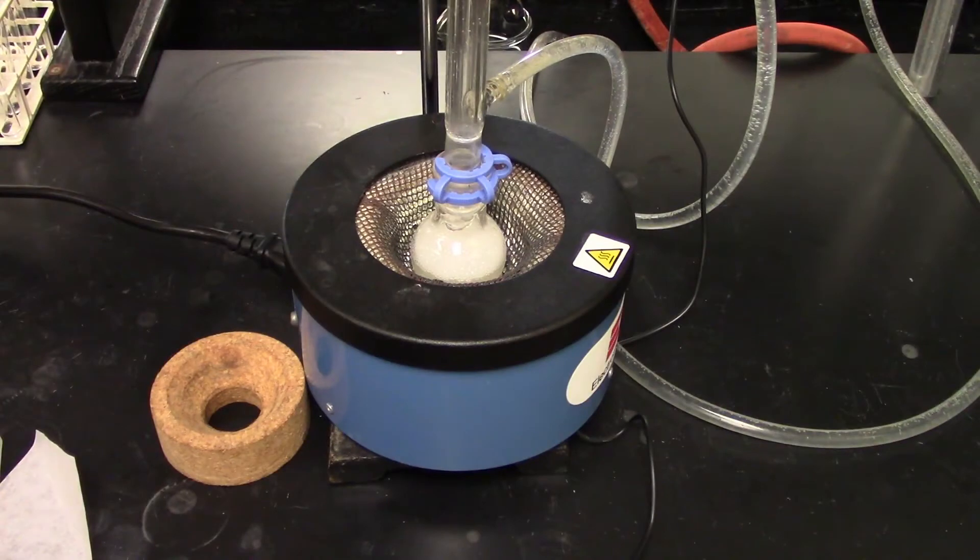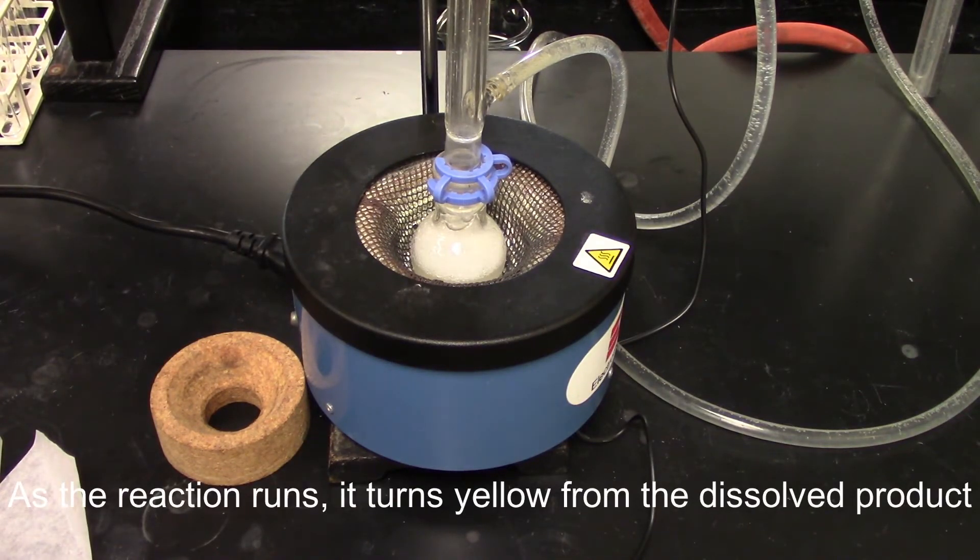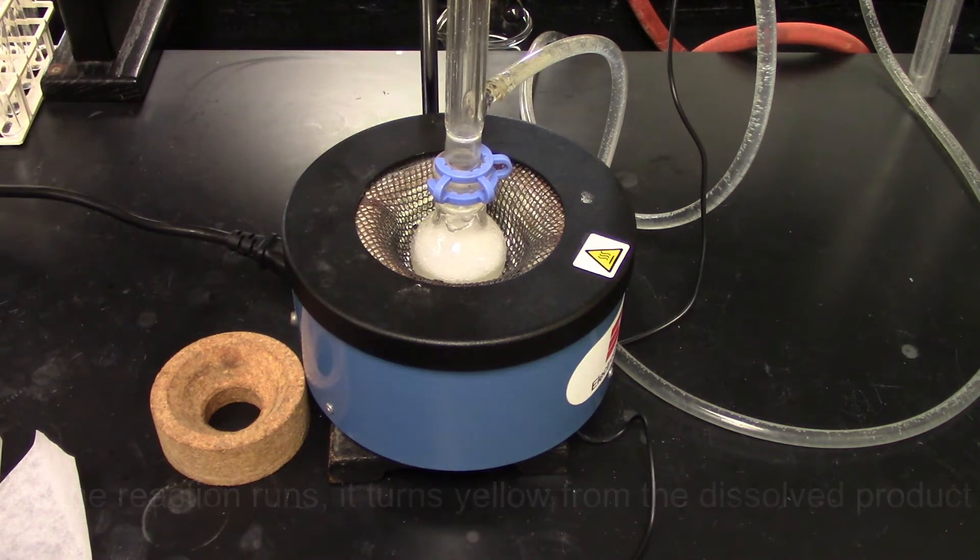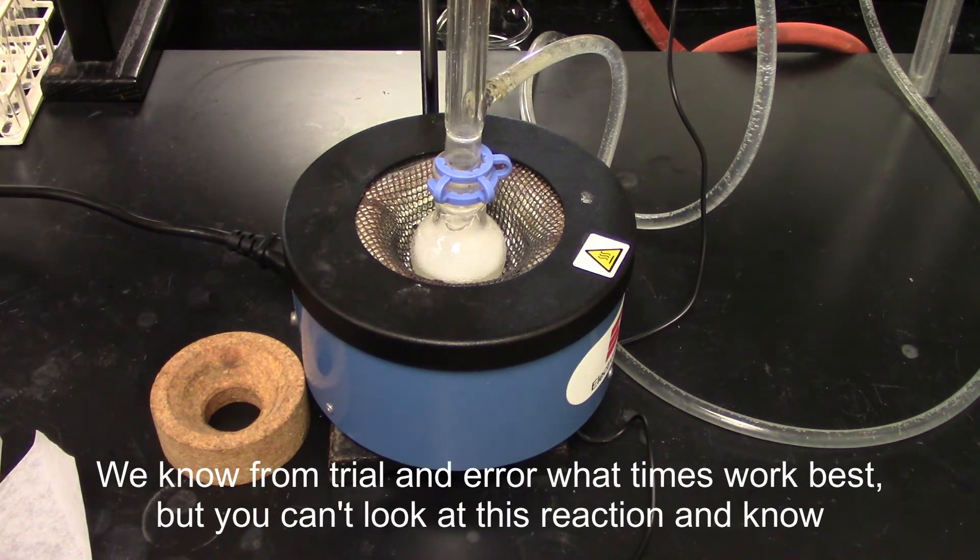Alright, so now we got the material to a fairly stable point. We turned the heat down and now it's just a matter of letting this reaction run to completion. We've optimized the time on this, so there isn't a good way to look and go 'oh it's done' at this point. But what we can do is run it for the requisite time that's in the lab manual, and when it's done we'll cool it down and start isolating the product.